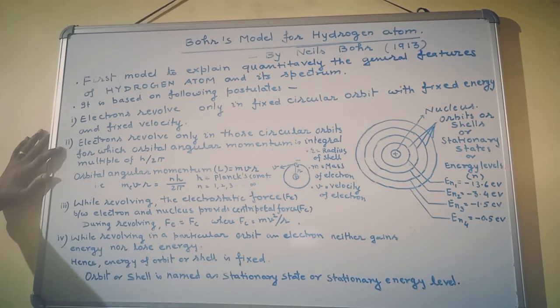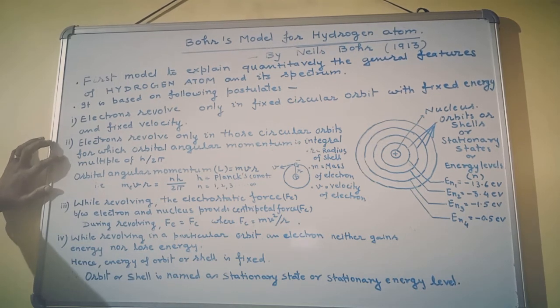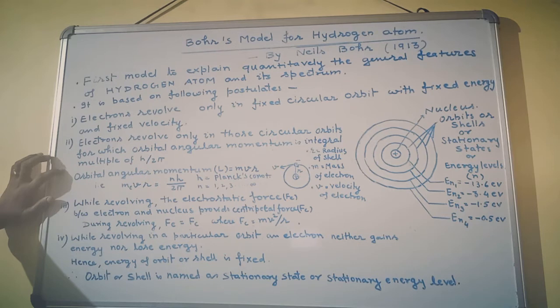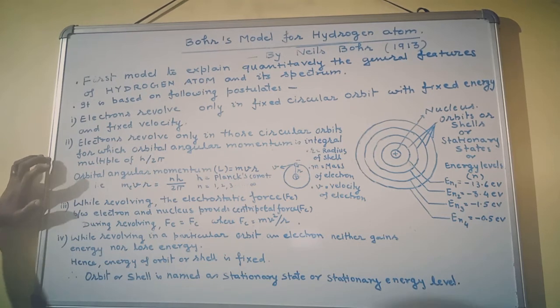Second postulate: electrons revolve only in those circular orbits for which orbital angular momentum is an integral multiple of h by 2π, where h is Planck's constant.